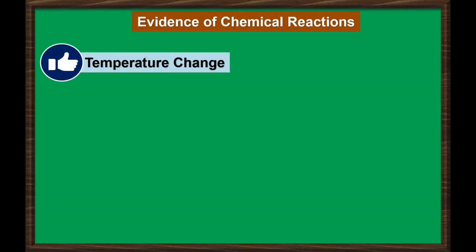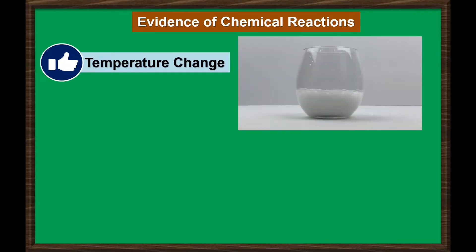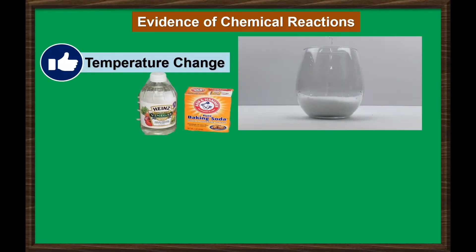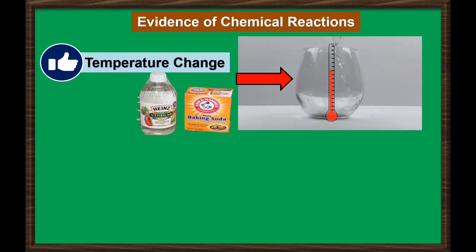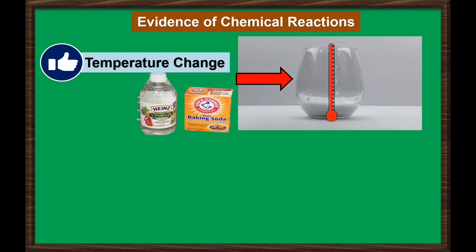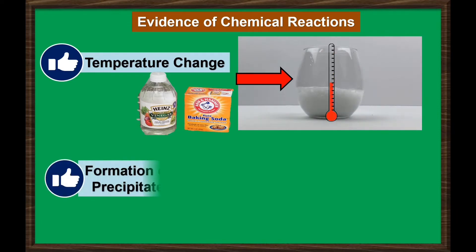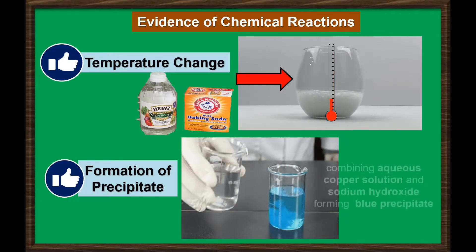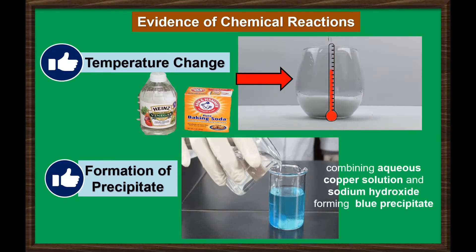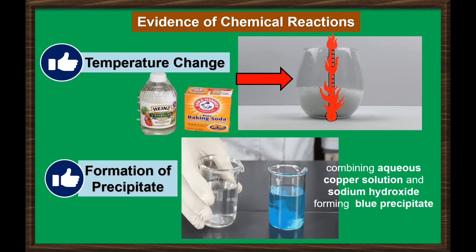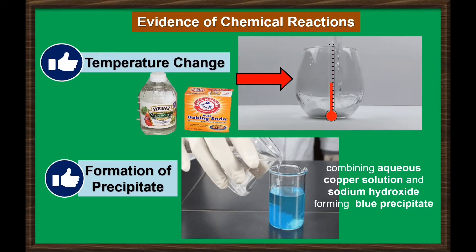A change in temperature means a chemical reaction happened. When the vinegar and baking soda were mixed, carbon dioxide evolved and an increase in temperature also happened during the reaction. And lastly, another strong evidence that a chemical reaction happened is the formation of precipitate. For example, if you combine aqueous copper solution and sodium hydroxide, it forms a blue precipitate.